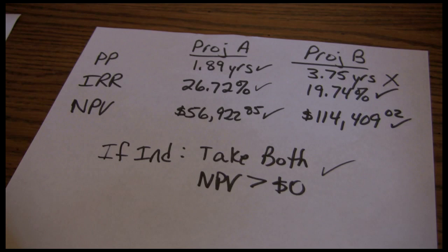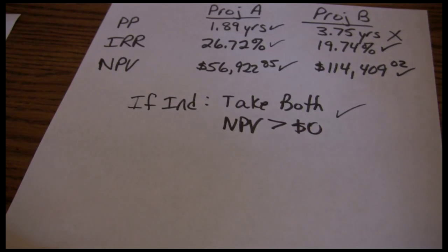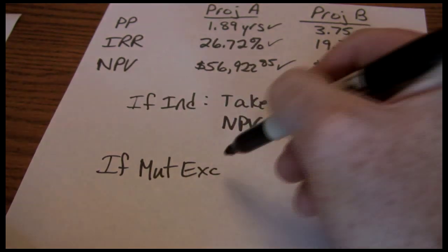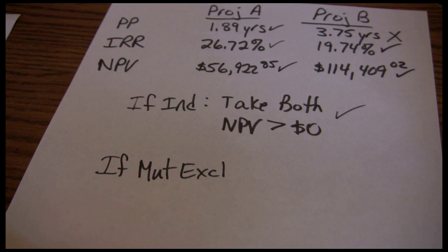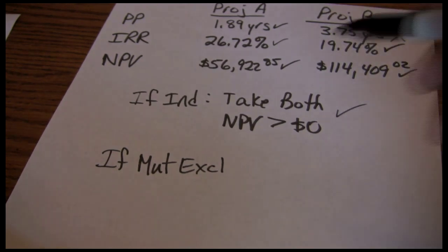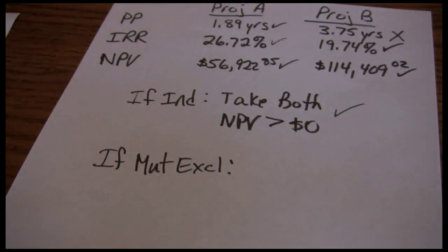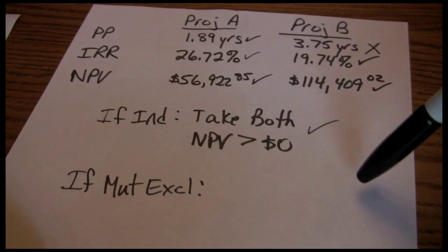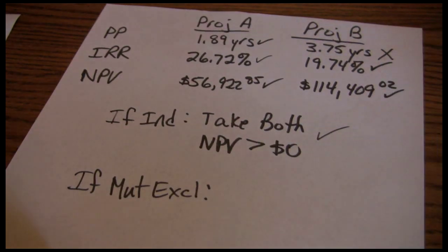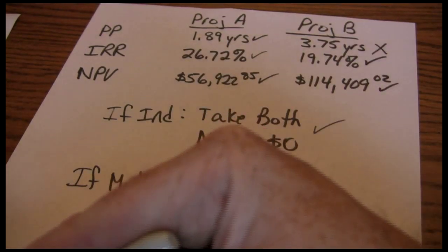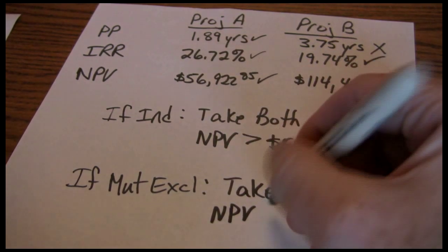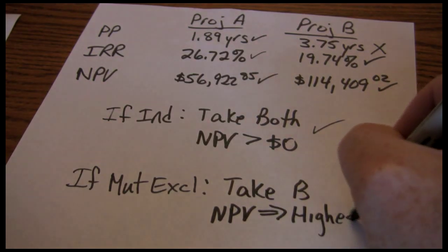In this case, we're going to take both projects. If the projects are mutually exclusive, that means we can take Project A or Project B or neither — however, we can't take both. If we take Project A, then B is off the table. If we take Project B, A is off the table. At first glance, it might look like Project A is a better project because it meets all three requirements; Project B only meets two. But again, net present value is our tiebreaker. In this case, Project B has a much higher net present value, so if we can only take one, we want to take Project B because it has the highest positive net present value.